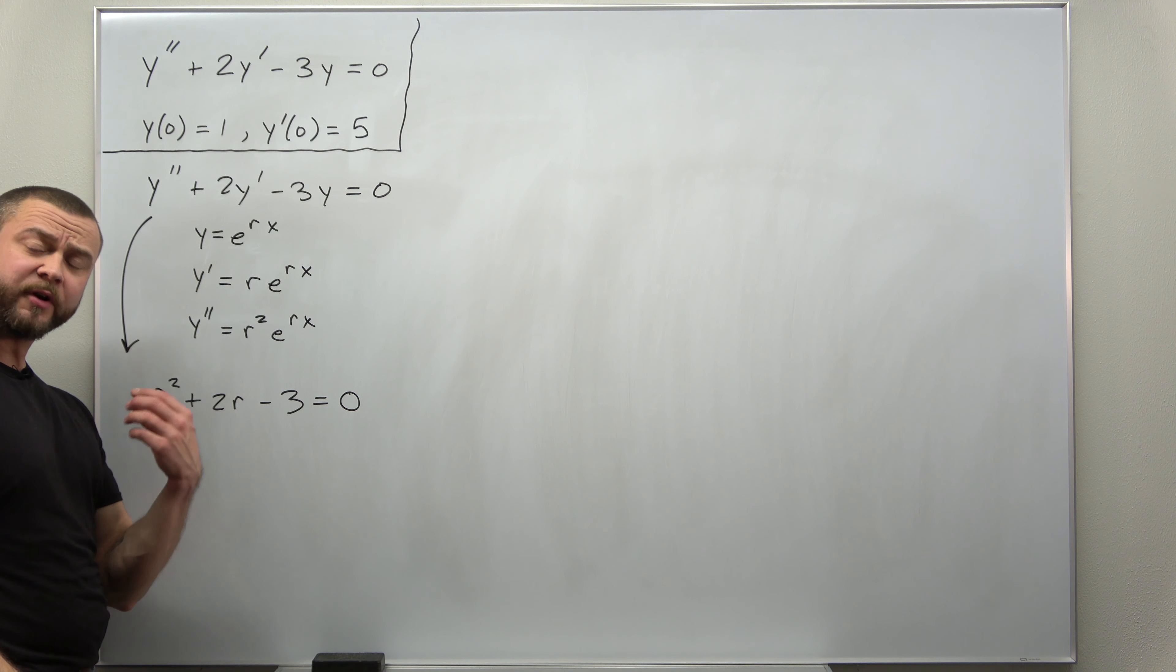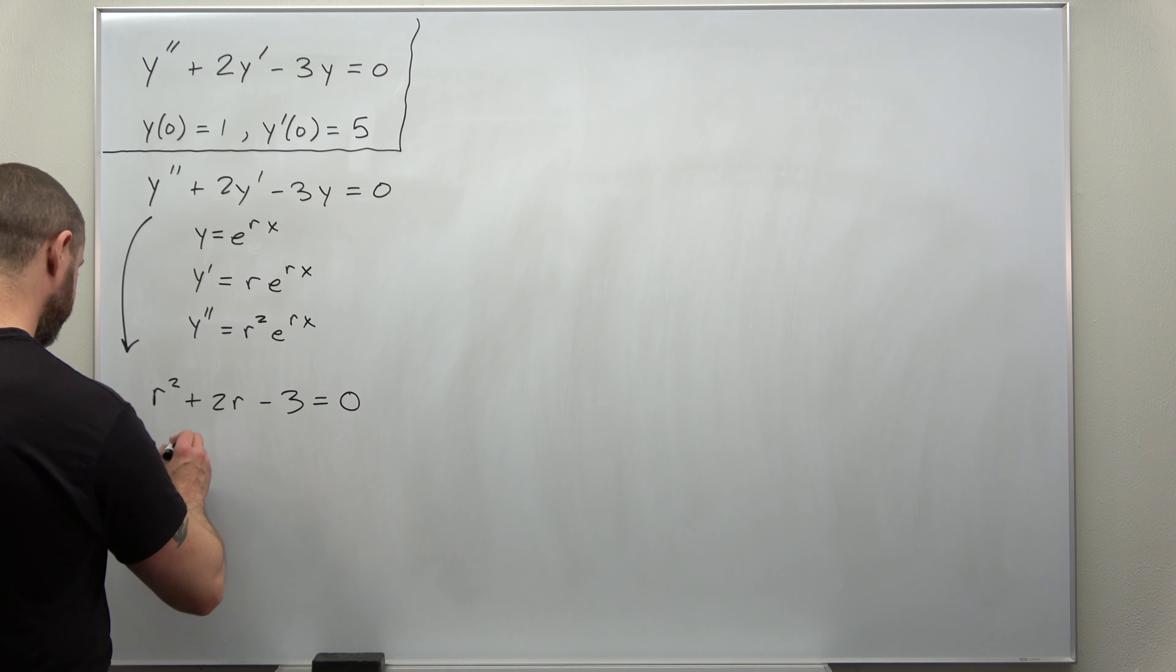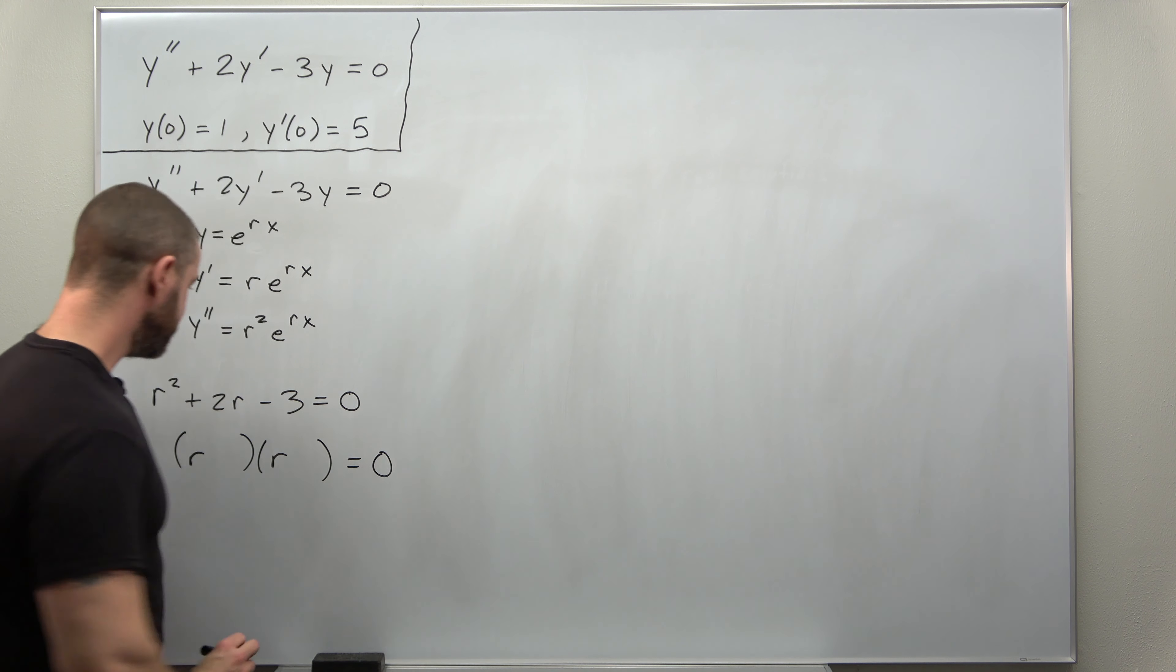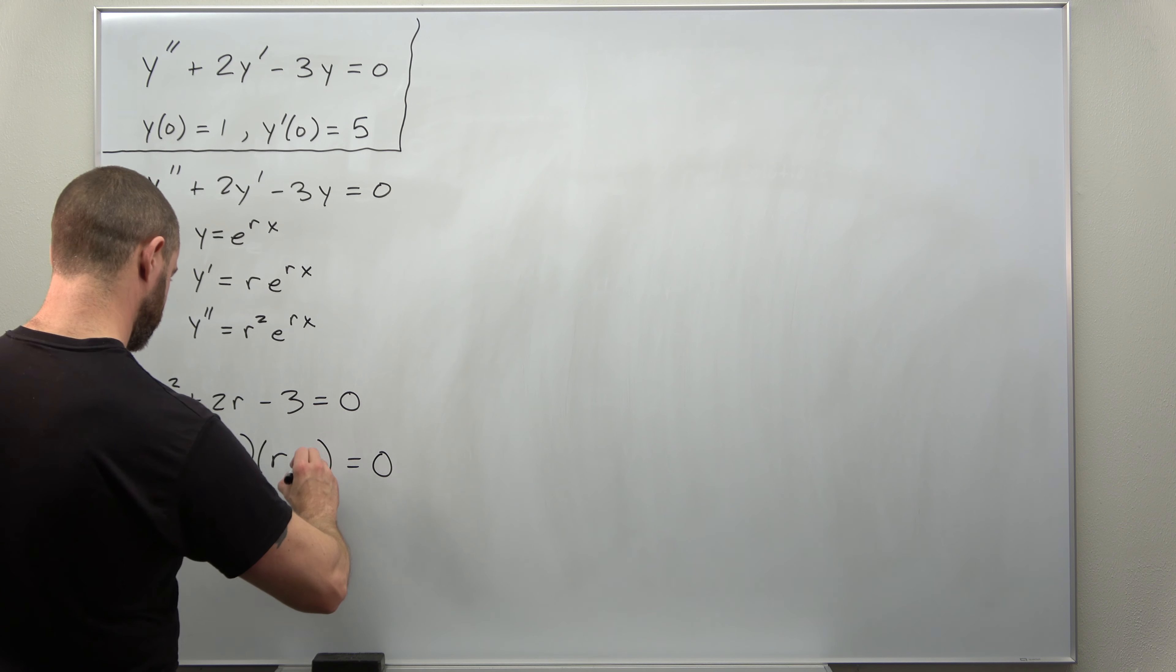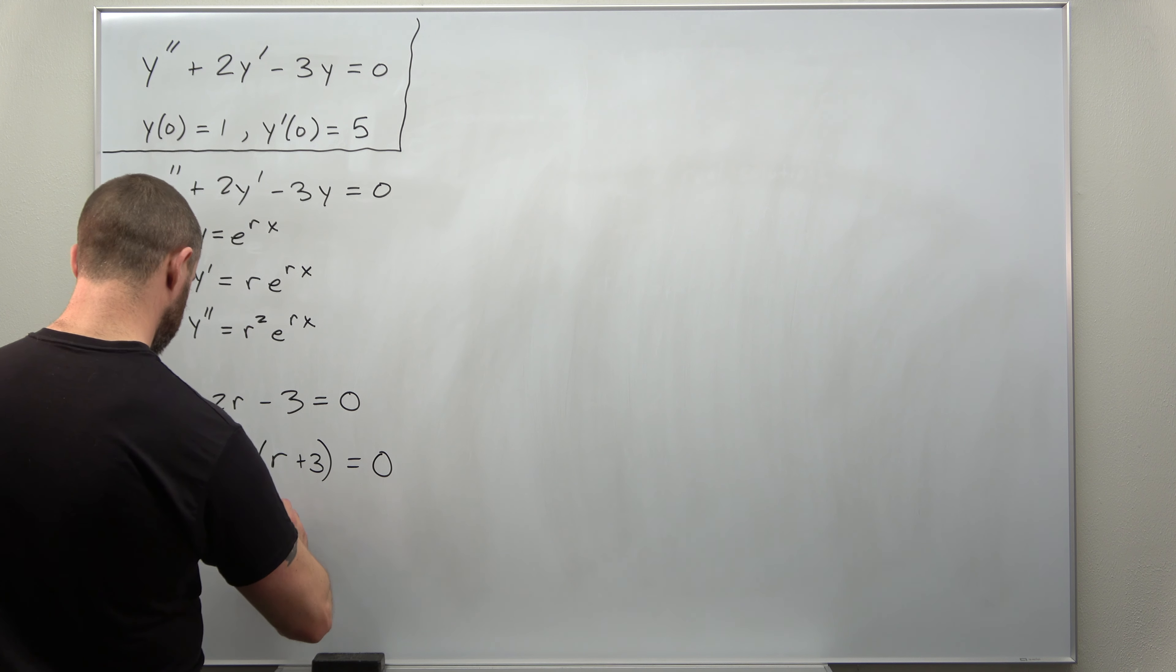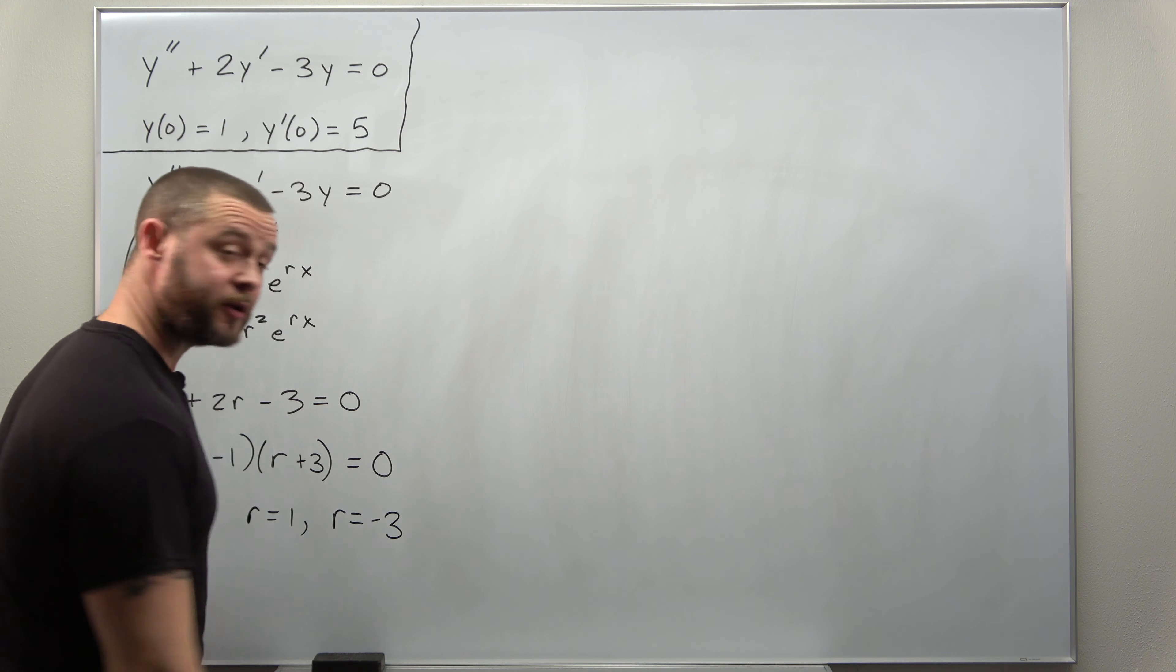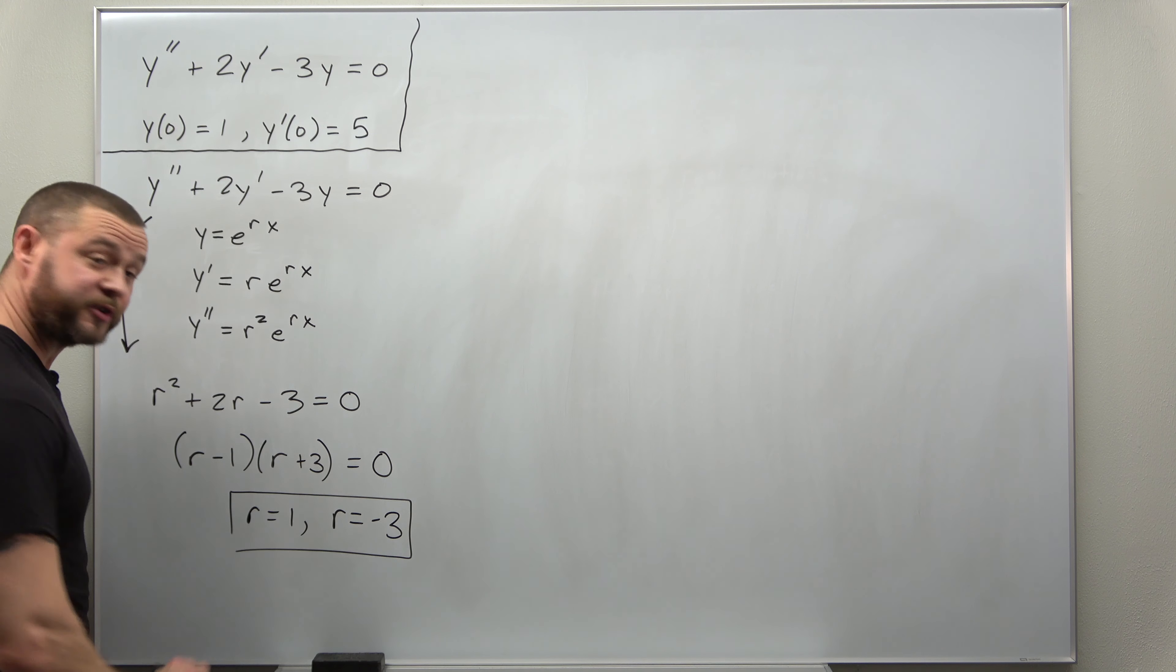Now this looks like a pretty simple quadratic equation, and we ideally try to factor this. And if we look for our factorization, I think that would factor as r minus 1 times r plus 3. And that will easily tell us the characteristic roots.